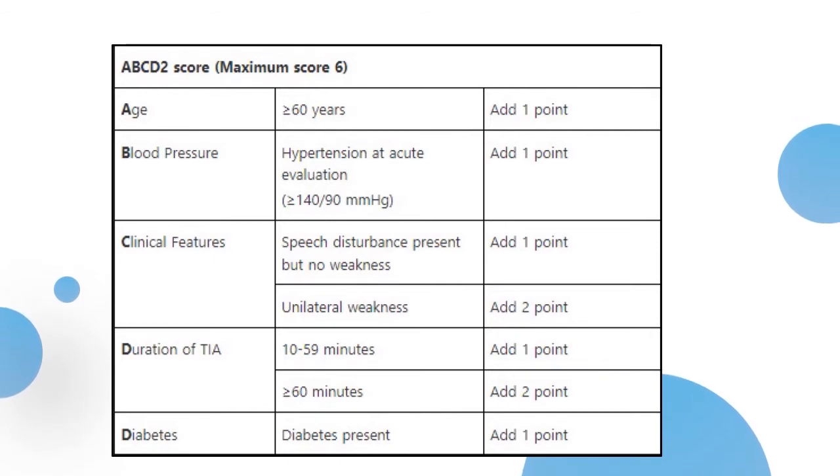The points are divided for age, blood pressure, clinical features, duration of TIA, and diabetes.